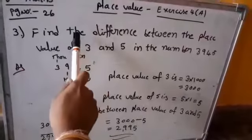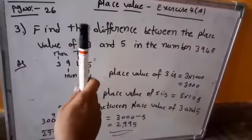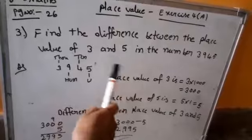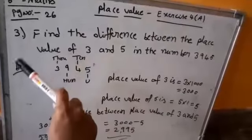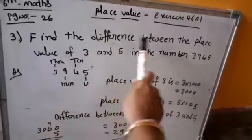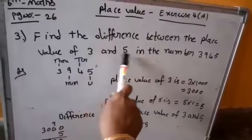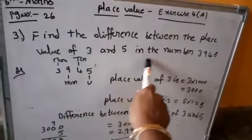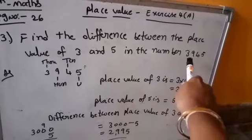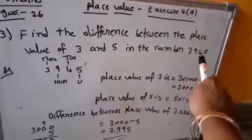Students, in the previous class I explained place value — how to find place value. So, that concept is related to the third problem. Find the difference between the place value of 3 and 5 in the number 3945.